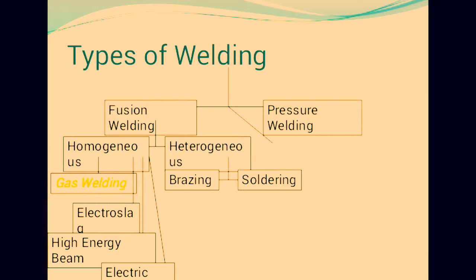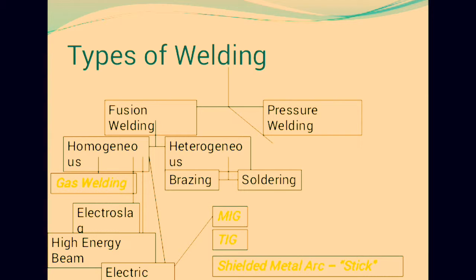Gas welding, electric welding, and high energy welding are the homogeneous types we are using. Electric arc welding is further divided into three types: MIG, TIG, and Shielded Metal Arc (stick) welding.